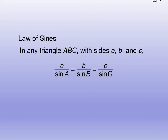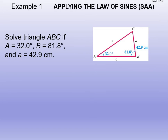Let's work through some examples. Always draw the triangles out — it makes it easier to step through. We're applying the side-angle-angle case here. Little a is across from big A, little b across from big B, little c across from big C. We have an 81.8-degree angle and a 32-degree angle, and we have little a. This fits SAA because we have one side and two adjacent angles.